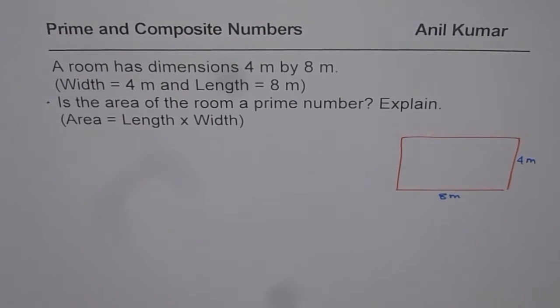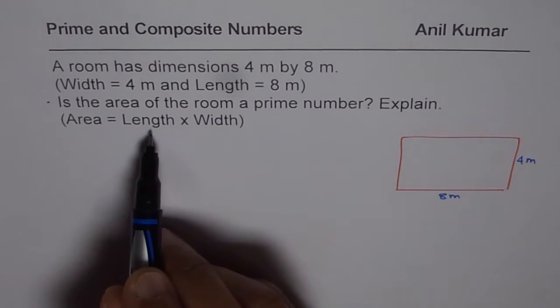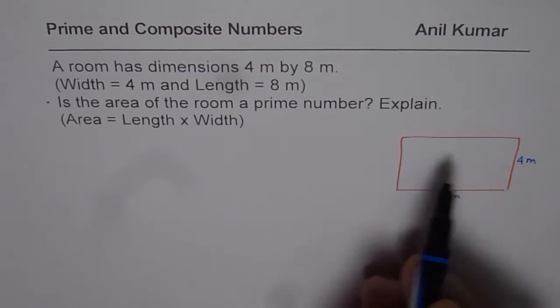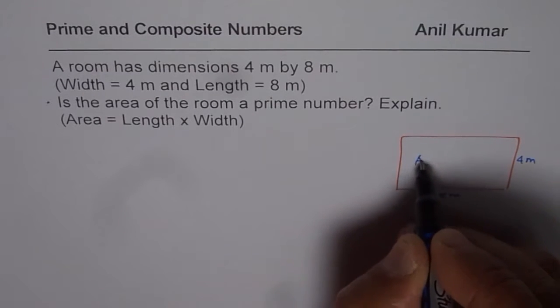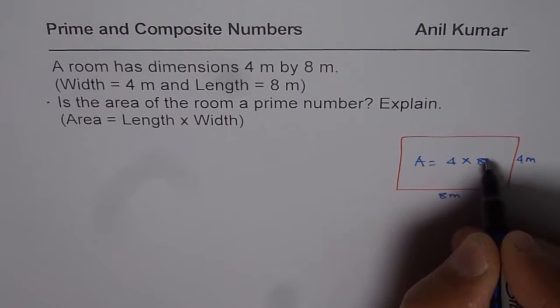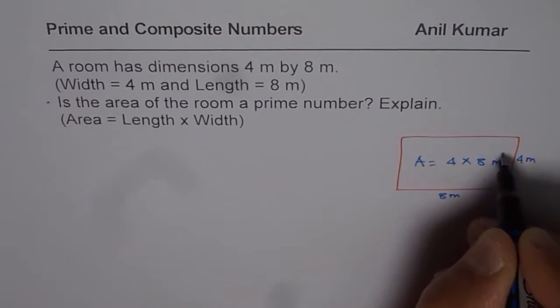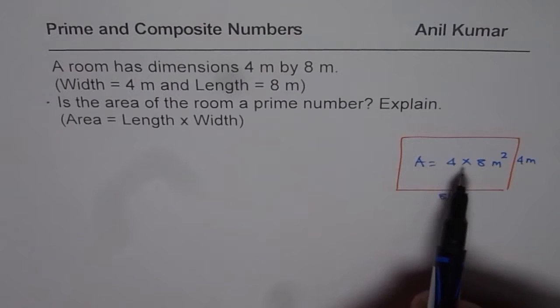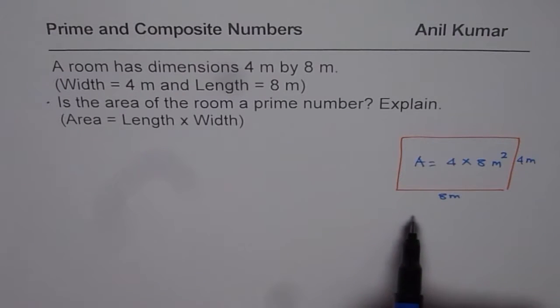Area is length into width. As far as the area is concerned, it is product of length and width. Therefore, for the area, what do you have? You have 4 times 8, meter times meter gives you meter square. In this particular case, area is product of two numbers, which in this case are 4 and 8.